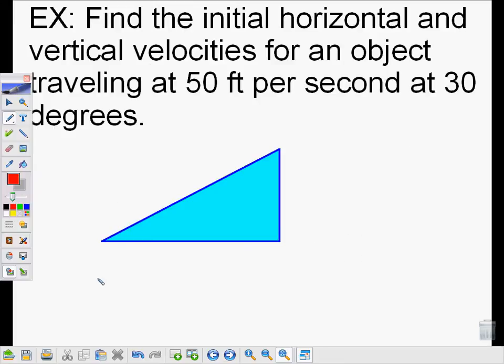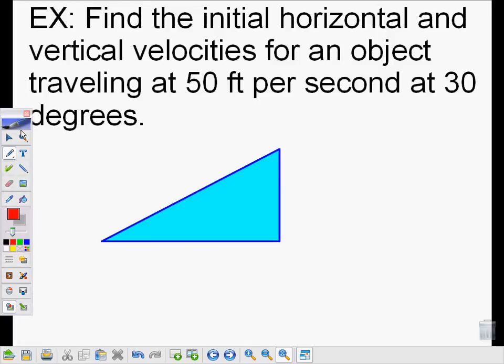Find the initial horizontal and vertical velocities for an object traveling at 50 feet per second at 30 degrees. So let's fill in our right triangle. The v, this magnitude is 50 feet per second. And this angle theta is equal to 30 degrees. I want to find the initial horizontal, the x part, and vertical components for this y.